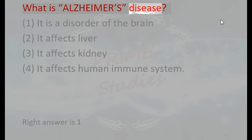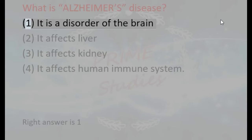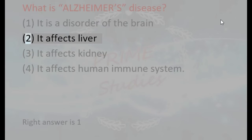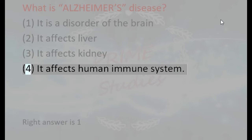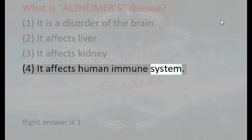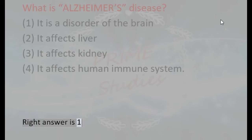What is Alzheimer's disease? 1. It is a disorder of the brain, 2. It affects the liver, 3. It affects the kidney, 4. It affects the human immune system. Right answer is 1.